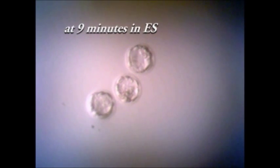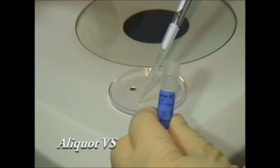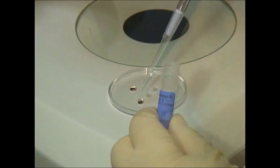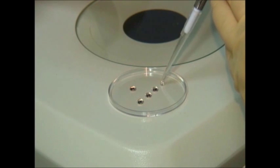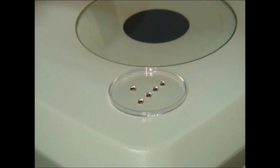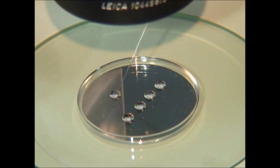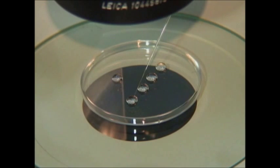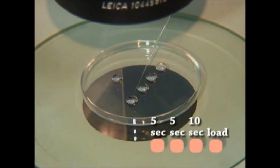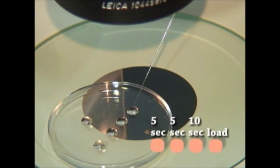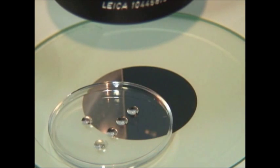During this time, similar to as detailed above for oocytes vitrification, four drops of vitrification solution is made in the bottom of the dish and the embryos are washed in them for five seconds and then again for five seconds in the second drop and 10 seconds in the third drop and then placed in the fourth drop.